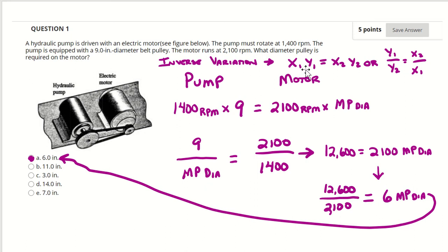So inverse variation x1 times y1 equals x2 times y2 or y1 over y2 equals x2 over x1. We know the pump is 1400 RPM with a 9 inch pulley. The motor we have at 2100 RPM, but we don't know the motor pulley diameter. We need to find that.